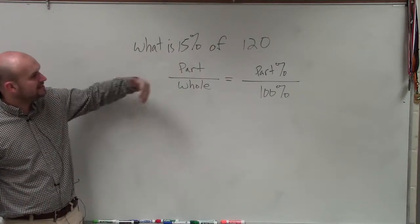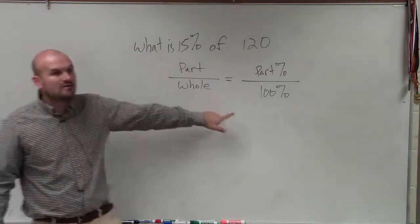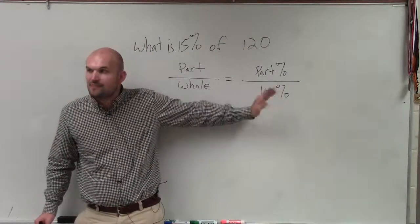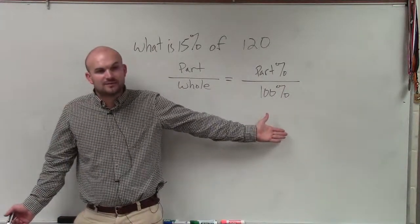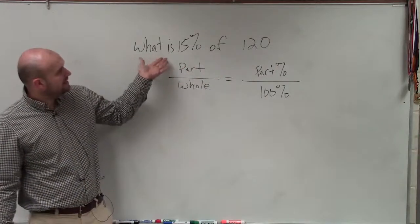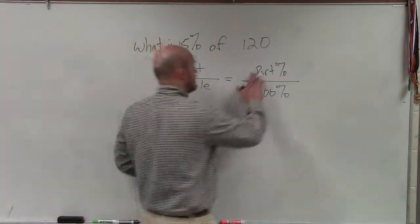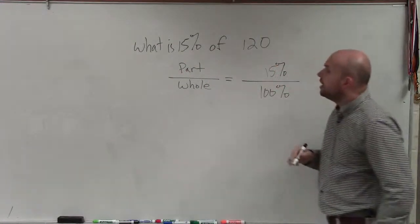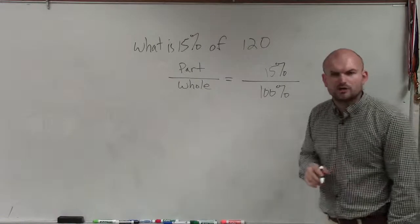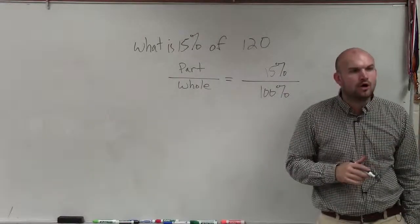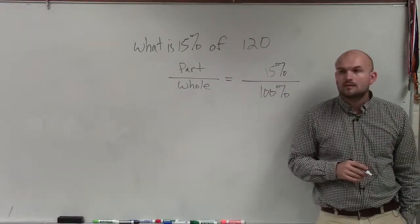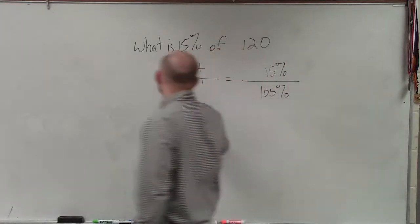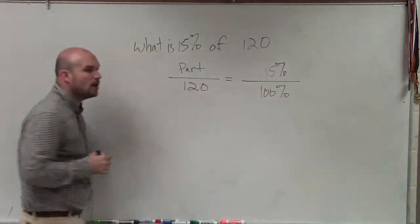So this is how we're going to be dealing with our ratios, as a comparison of a part over a whole. So now what we need to look at is, we're always going to have 100% here, always. And then we just need to determine what are the values that we have. So it says, what is 15%? Well, obviously, that's our part of our percent. So that will be 15% of 120. So 120, does that represent the part or the whole? The whole. Represents the whole.